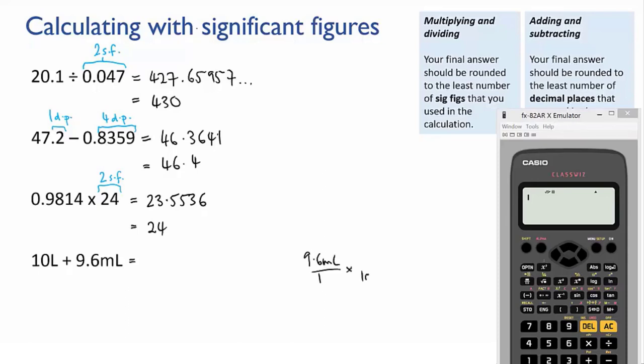I'm going to convert 9.6 mils to litres. Quick conversion shows us that it's 0.0096 litres. So then we have 10 plus 0.0096 which gives us 10.0096. But it's an addition so we're checking decimal places. Now the 10 litres has no decimal places so our final answer must also be rounded to no decimal places and that makes it 10 litres.